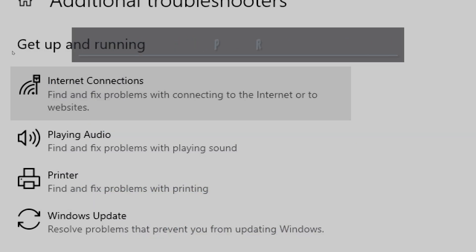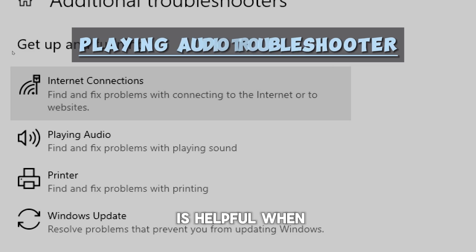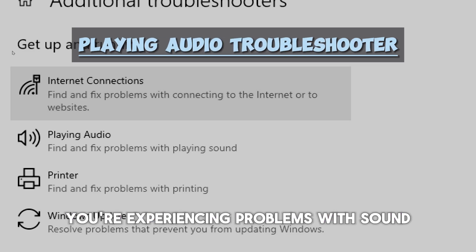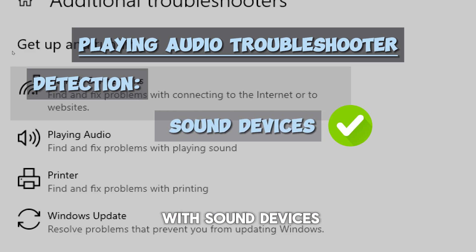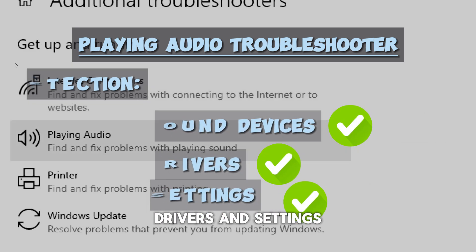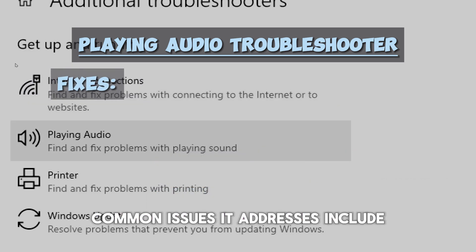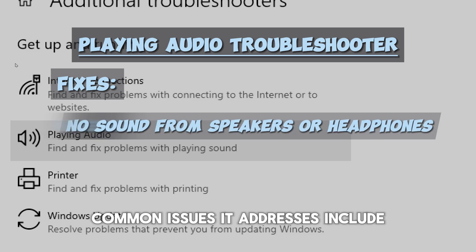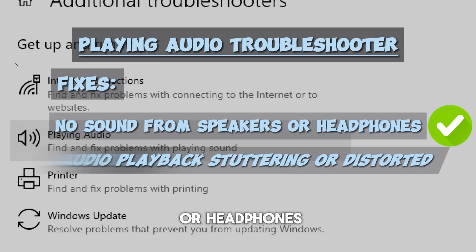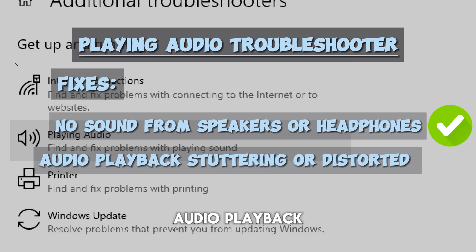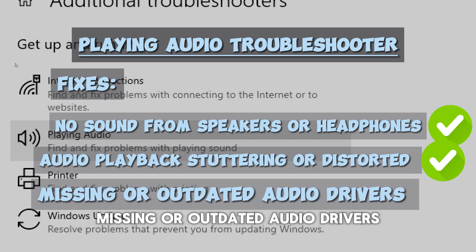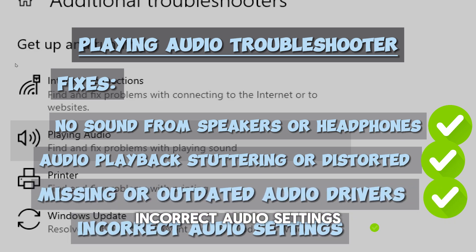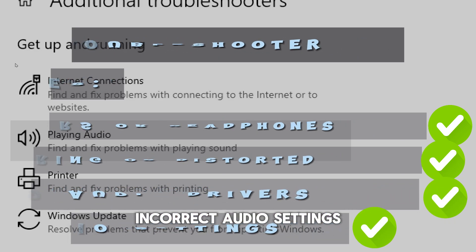IP address conflicts. The Playing Audio troubleshooter is helpful when you're experiencing problems with sound output on your computer. It can detect issues with sound devices, drivers, and settings. Common issues it addresses include no sound from speakers or headphones, audio playback stuttering or distorted, missing or outdated audio drivers, and incorrect audio settings.